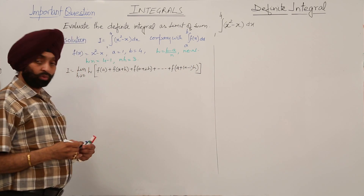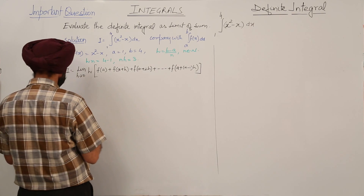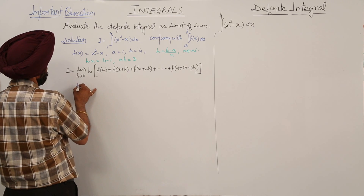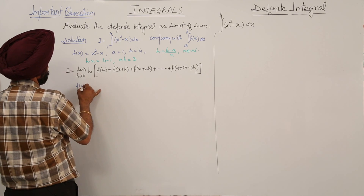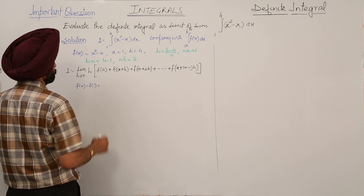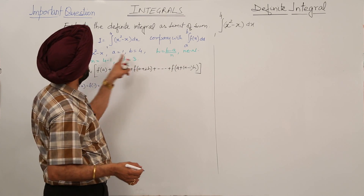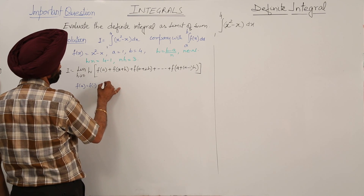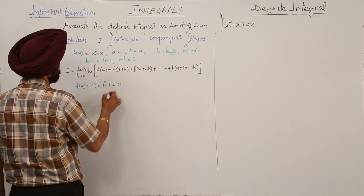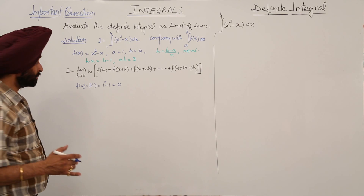Now going individually for each term. For f(a): f(a) = f(1), and since f(x) = x² - x, we get f(1) = 1² - 1 = 0. So the first term is 0.